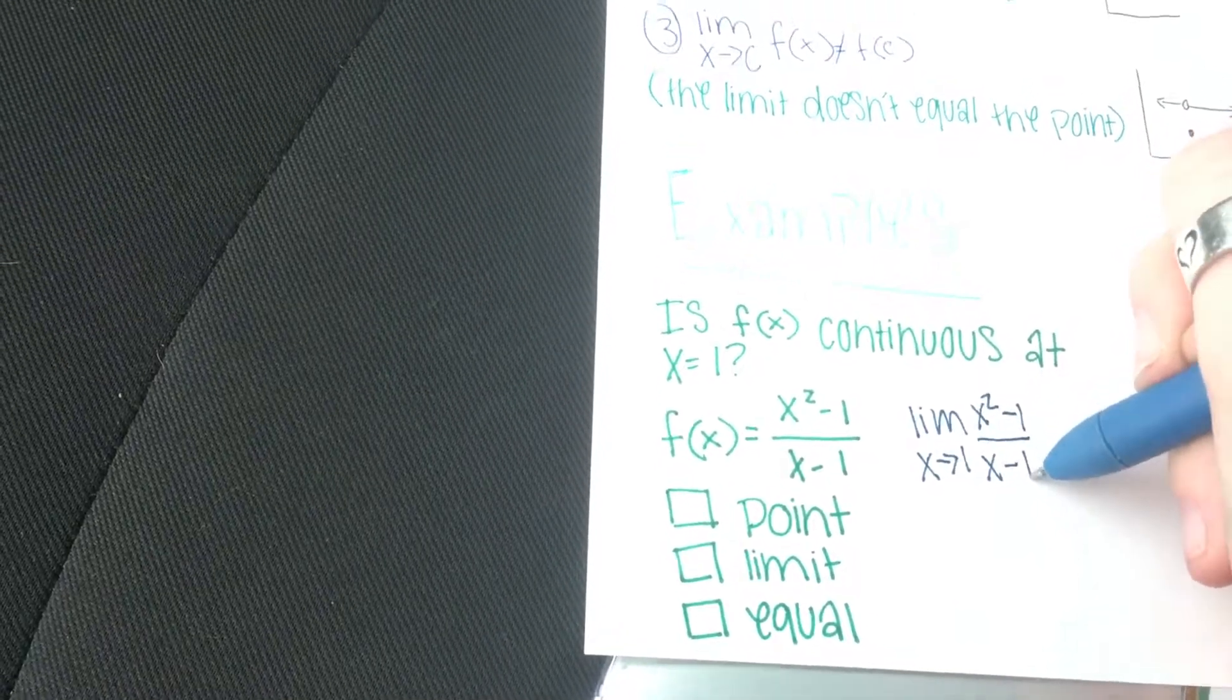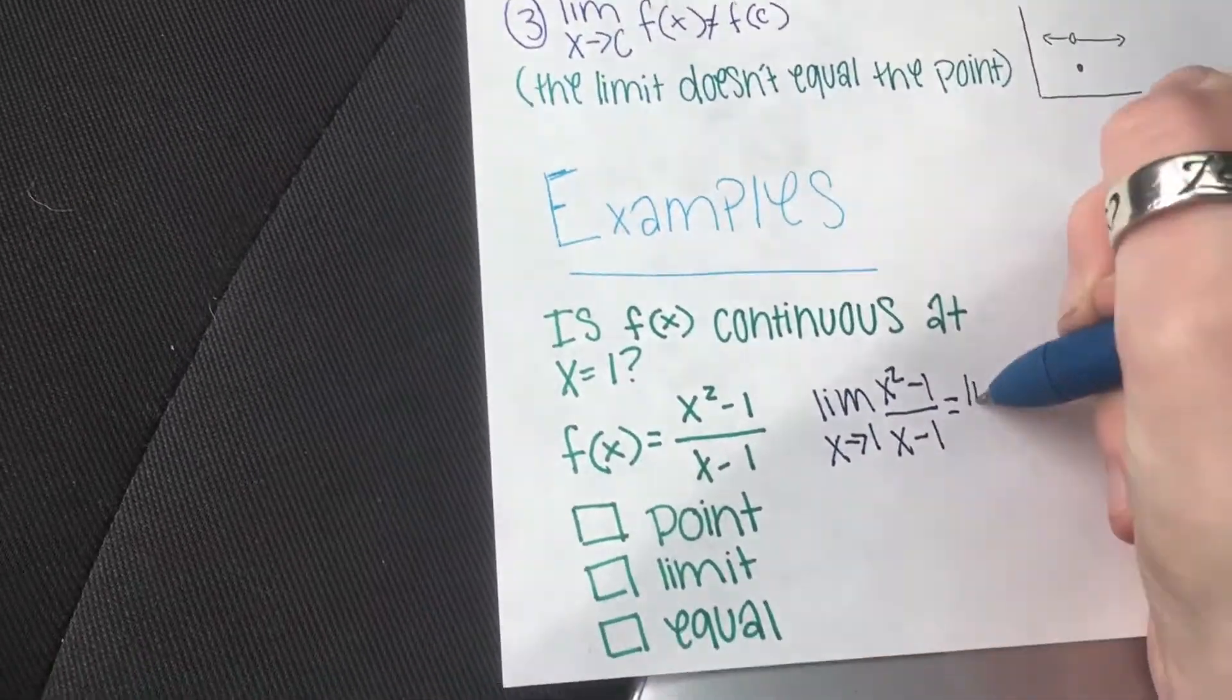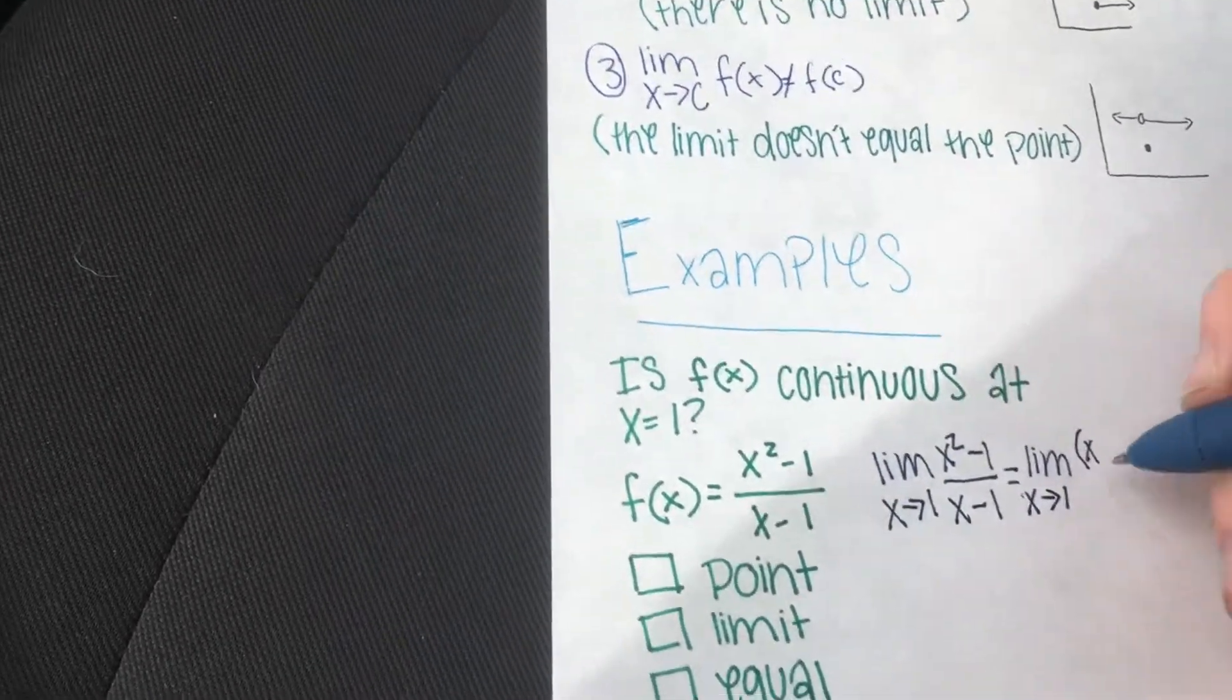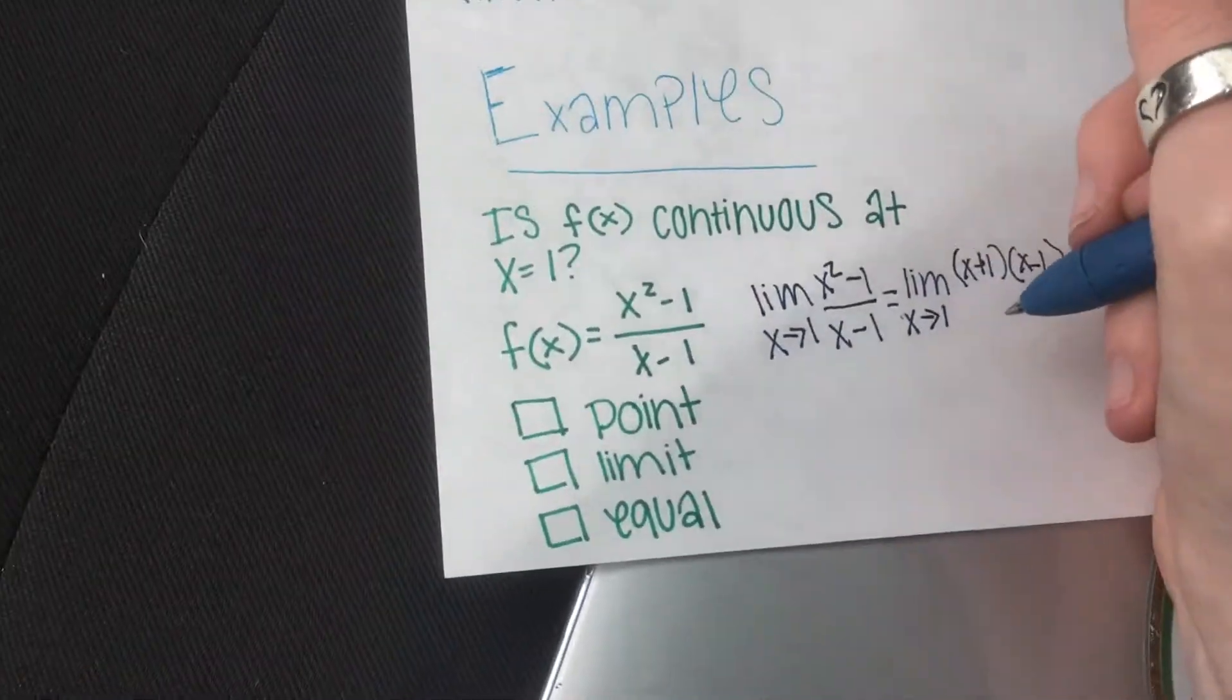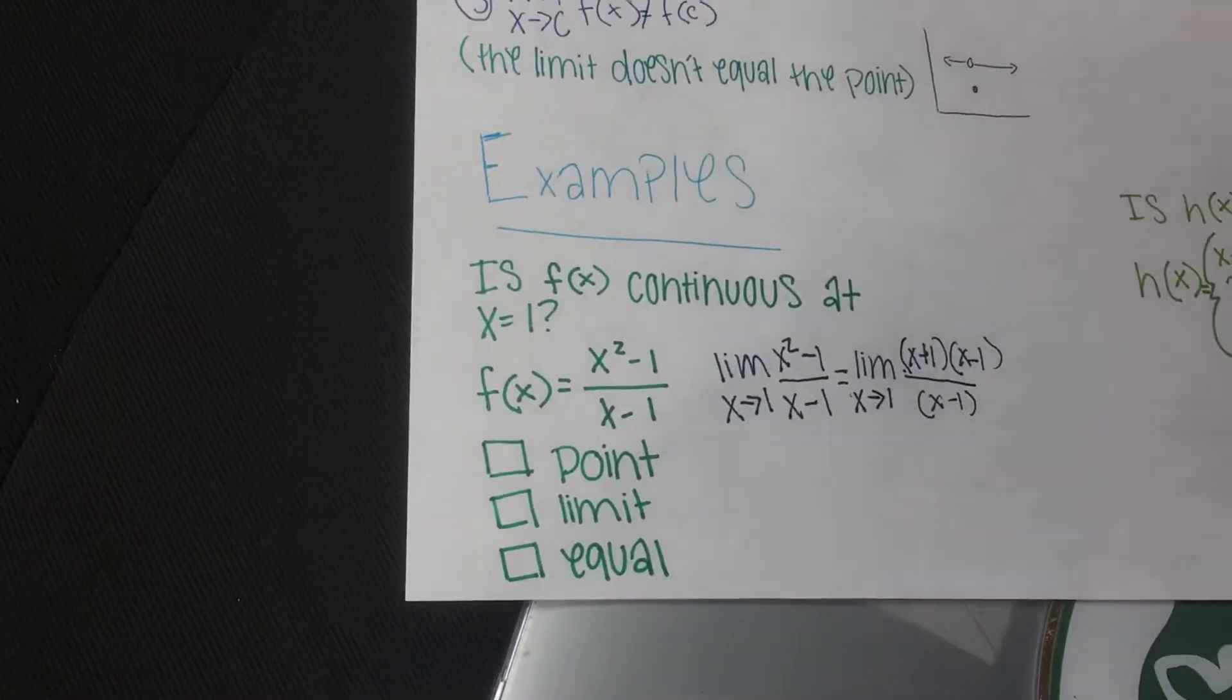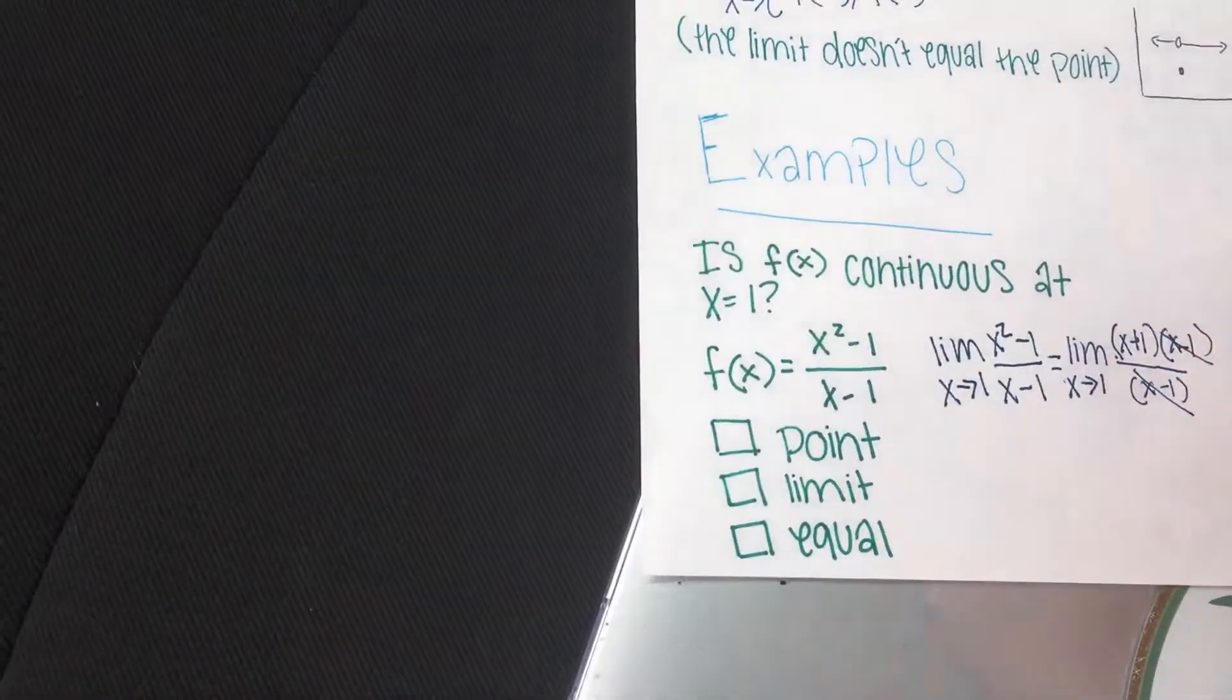So we have to factor out our numerator. So then we get the limit as x approaches 1 to be x plus 1 and x minus 1, and x minus 1. So then we can cancel out after we write the bottom one, x minus 1.